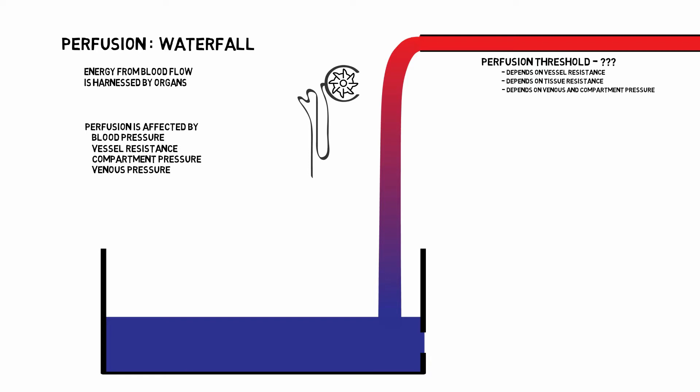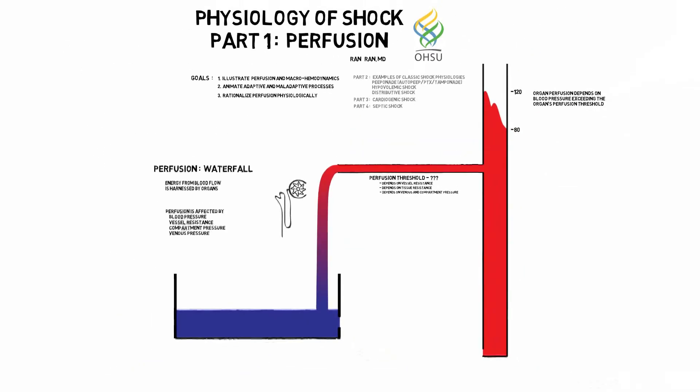Take two waterfalls, both 65 meters tall. One can be a trickle and the other a torrent. Flow depends not just on the pressure, but also the volume of blood above this perfusion threshold.